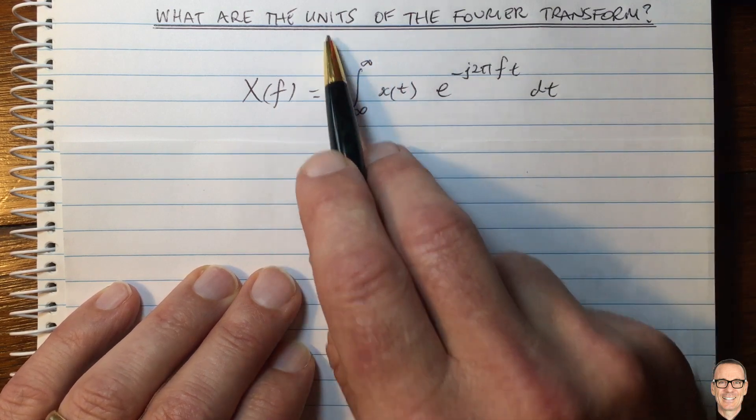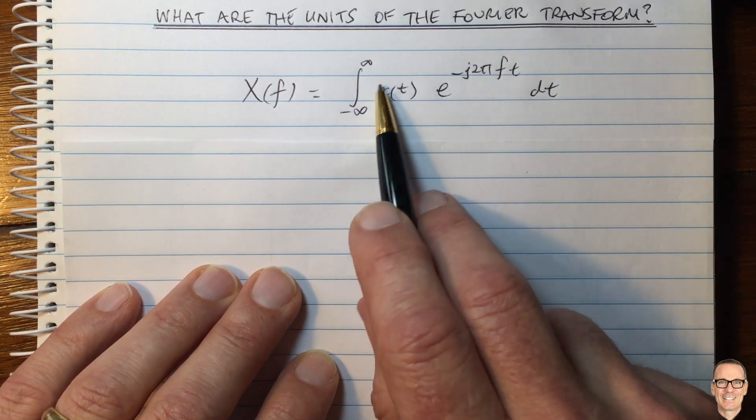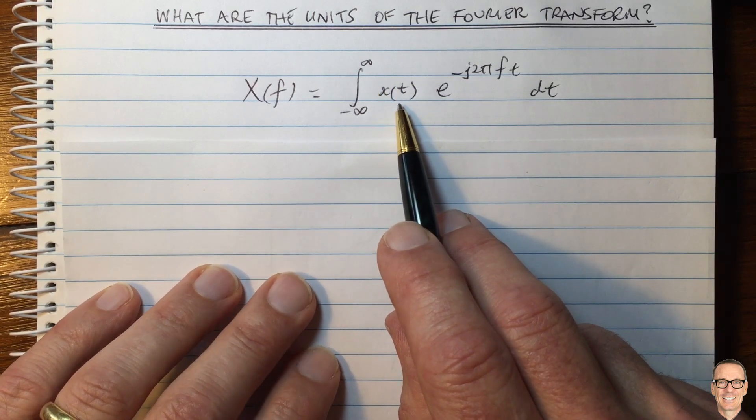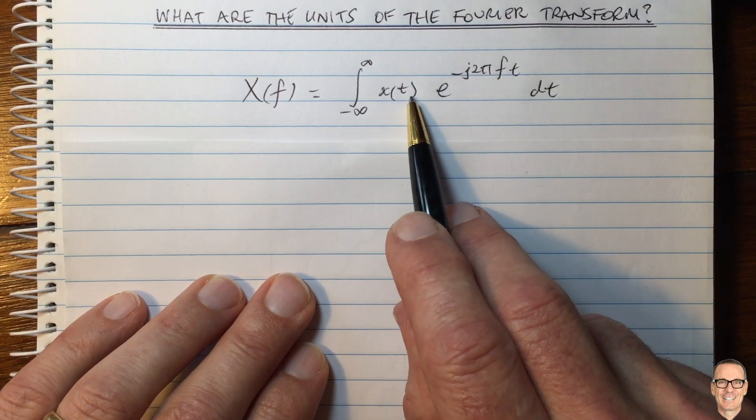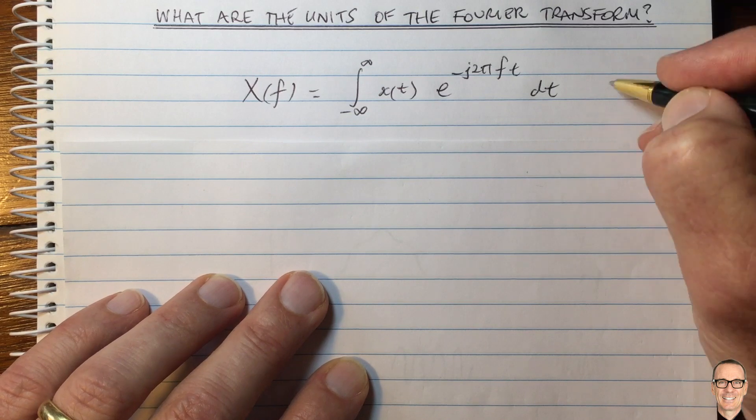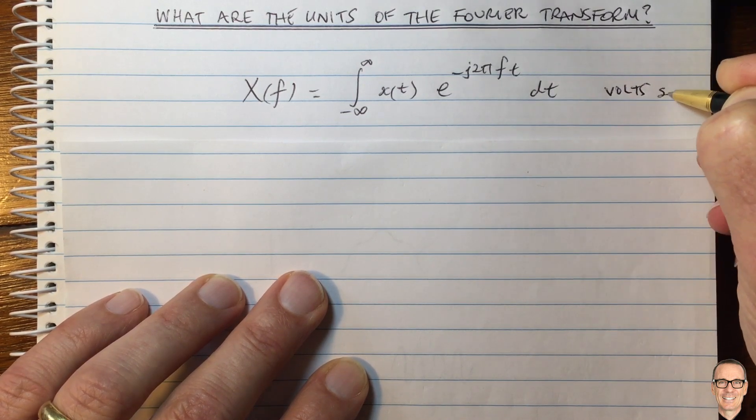Well, let's think about the units. So here's the equation for the Fourier transform. If we think of a signal as a voltage signal, an electrical voltage signal, then this is volts being added up over time. So this is volts times time, volts times seconds.